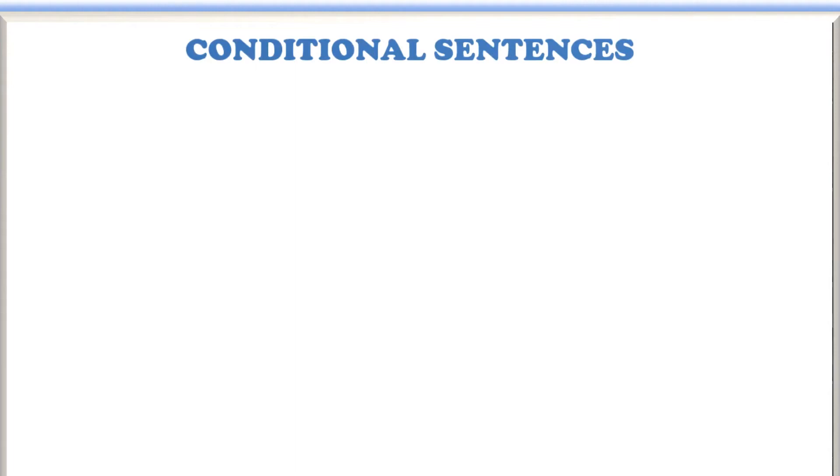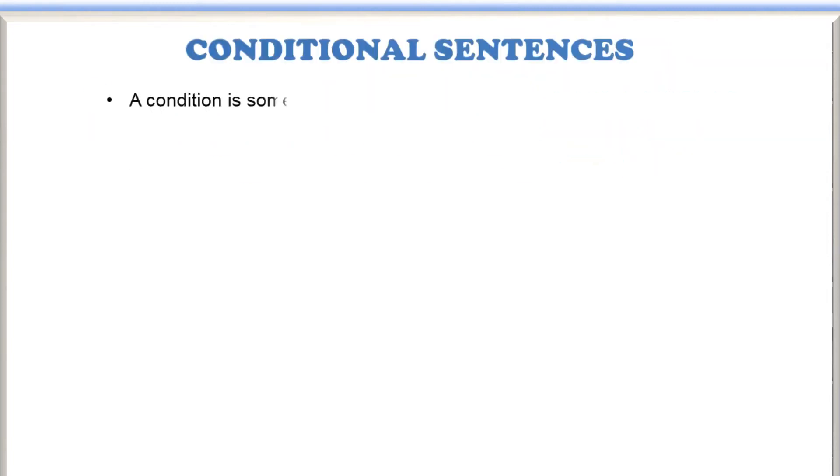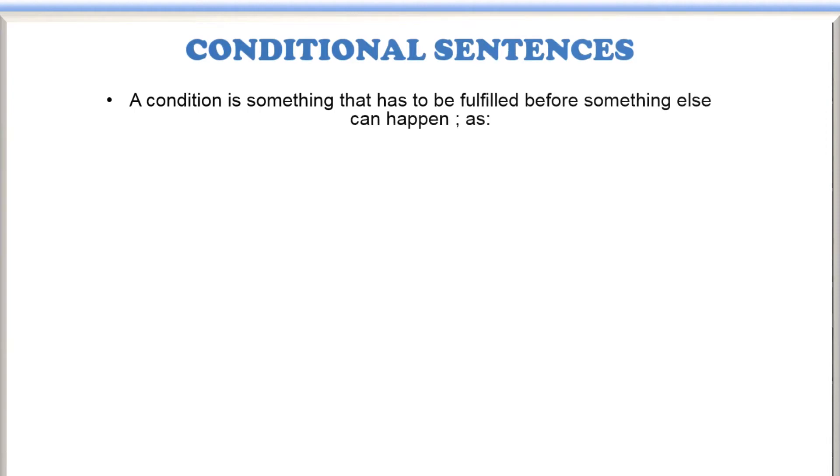Hello, my dear students. Today we are going to talk about conditional sentences. This is a major concept, a major topic to discuss in English grammar. First of all, we discuss what is a condition here. A condition is something that has to be fulfilled before something else can happen.